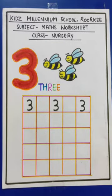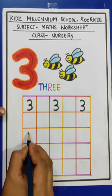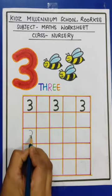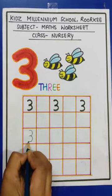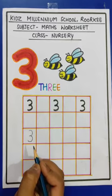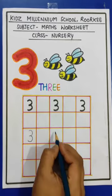Let's start. How to write number 3? Curve. Again curve. 3. Number 3.